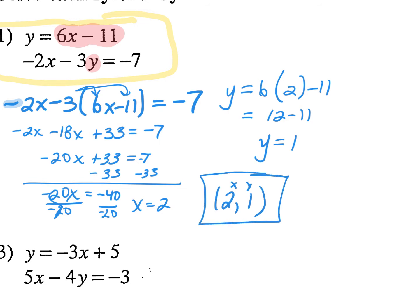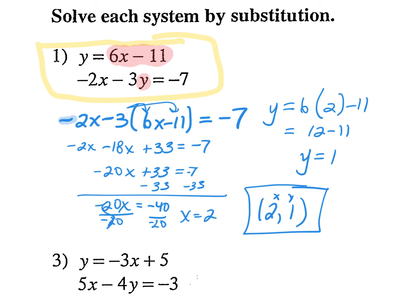Should I just move on and say I'm pretty sure I'm right? No. Just take a second to plug back in. I just need to see that you guys know your answer is right. Let's do this mentally — plug in 2 and 1 in the top equation: 6 times 2 is 12, and 12 minus 11 is 1. That's true. Now let's look at the bottom.